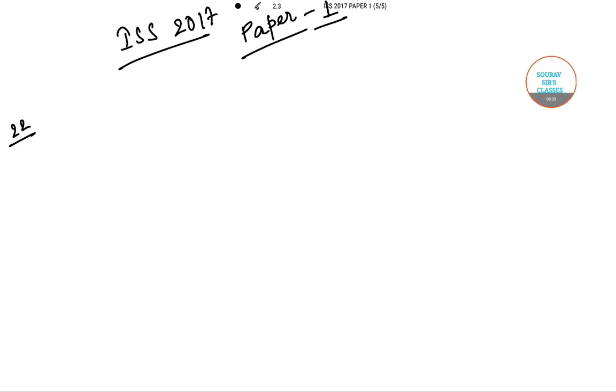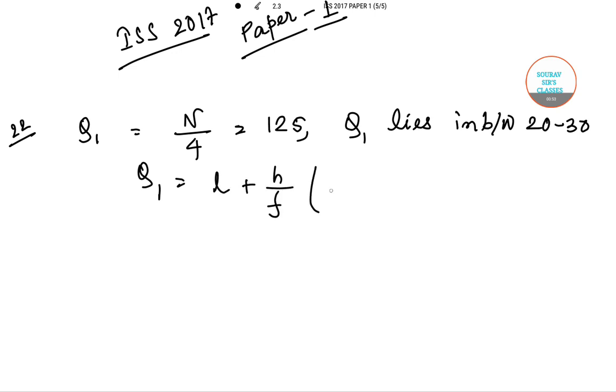So in that case, for Q₁ we can say N/4 equals 125, so Q₁ lies between 20 to 30. Q₁ equals L plus h/f times (N/4 minus CF).